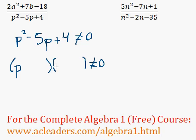So here we have p, another p, and we're looking for two numbers that multiply to 4 and add up to negative 5. Those would be negative 1 and negative 4. So we know that p minus 1 times p minus 4 cannot equal 0.